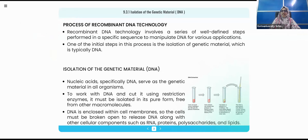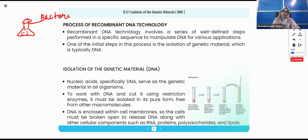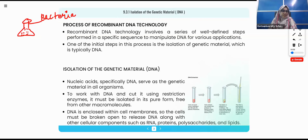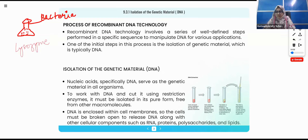If the material in the flask is bacteria, the enzyme used is lysozyme. If it is a plant cell, we use cellulase. If it is a fungal cell, the enzyme needed to break the wall is chitinase. So depending on the organism in the flask, a specific enzyme is added.